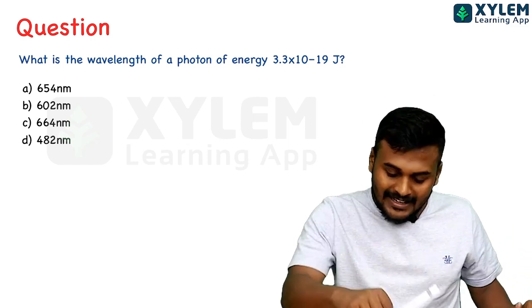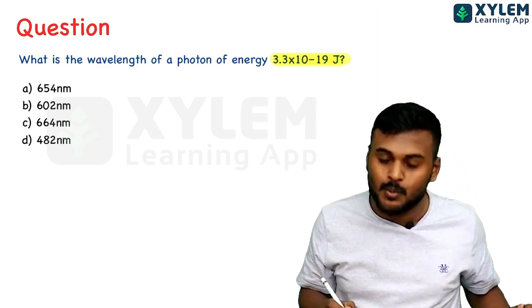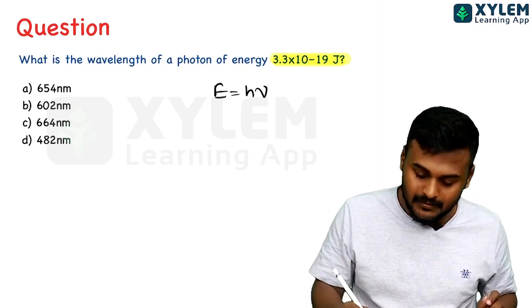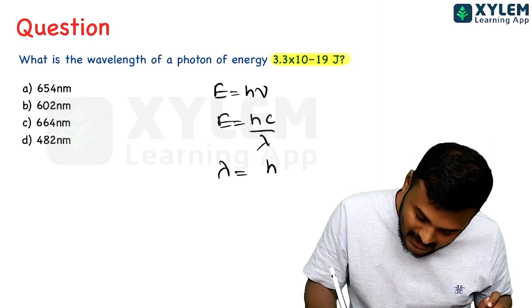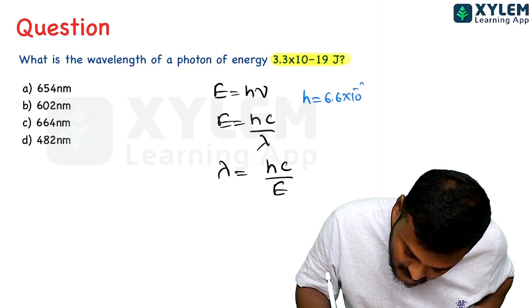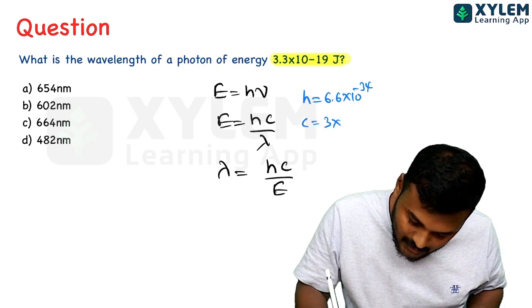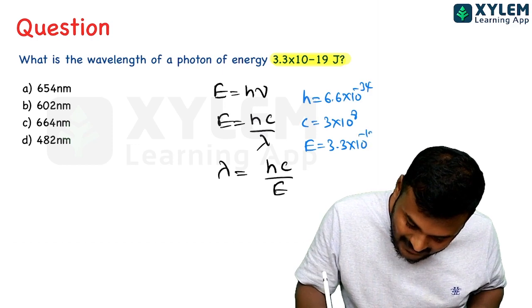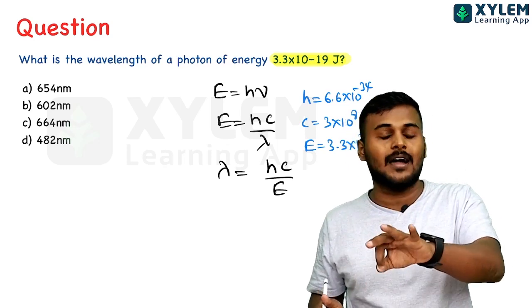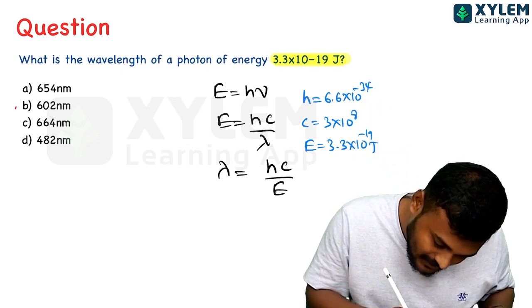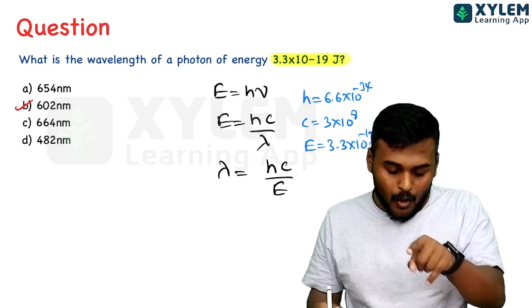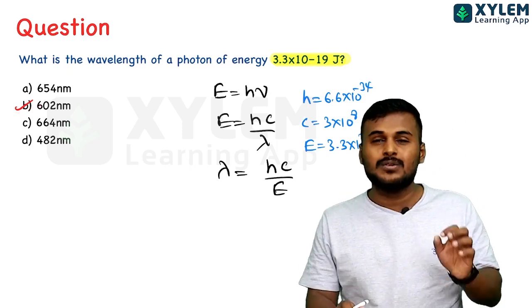What is the wavelength of a photon whose energy is 3.3 into 10 raise to minus 19 joules? Using lambda equals hc by E: h equals 6.6 into 10 raise to minus 34, c equals 3 into 10 raise to 8, E equals 3.3 into 10 raise to minus 19 joules. The answer in meters, converted to nanometers by multiplying by 10 raise to 9, gives 602 nanometers.